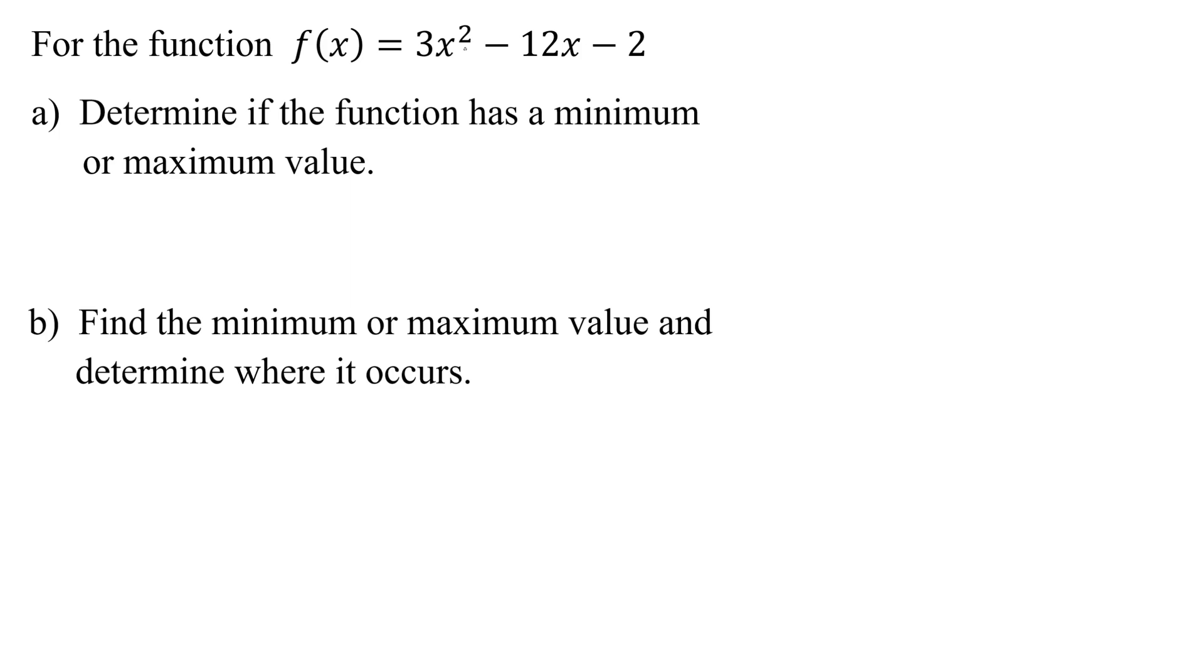The first thing I need to find is if the function has a minimum or a maximum value. This is determined by whether the parabola opens up or down. So if I compare my parabola to f of x equals ax squared plus bx plus c, what is the value of a for my parabola? A is the coefficient of the x squared term, so it is 3, b is the coefficient of the x term, negative 12, and c is the constant term, so it is negative 2.